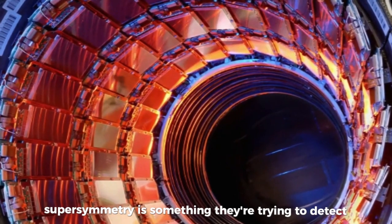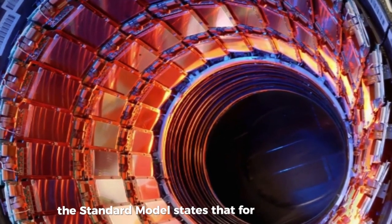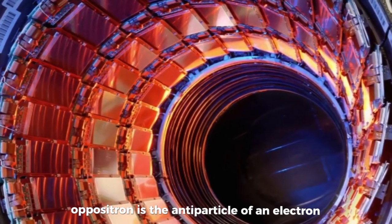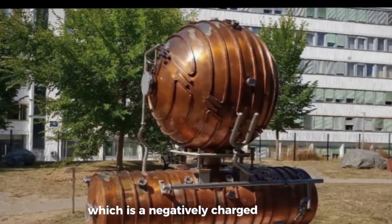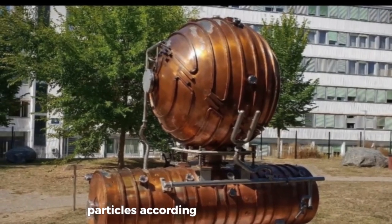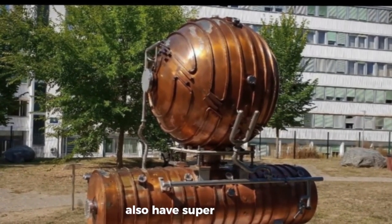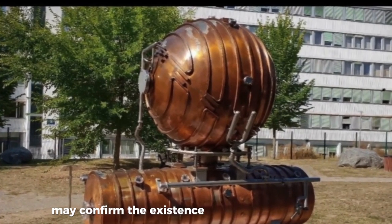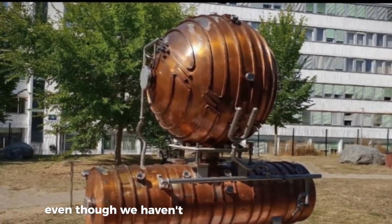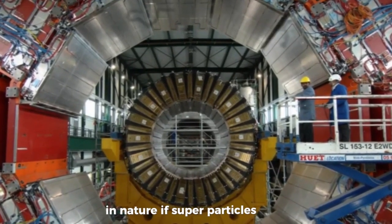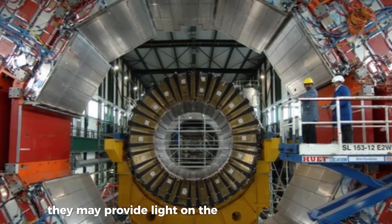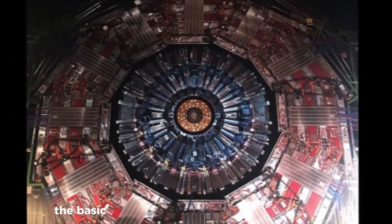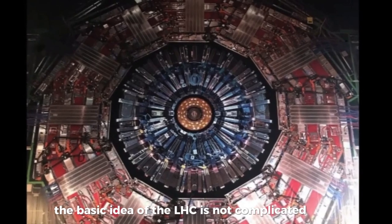Supersymmetry is something they're trying to detect. The standard model states that for every particle, there exists an antiparticle. A positron is the antiparticle of an electron, which is a negatively charged particle. Particles, according to supersymmetry, also have superpartners who also have corresponding antiparticles. The LHC may confirm the existence of these superpartners, even though we haven't found any evidence of them in nature. If superparticles exist, they may provide light on the nature of dark matter and make it easier to include gravity in the current standard model.